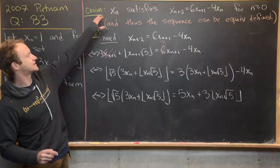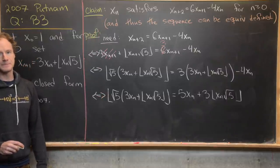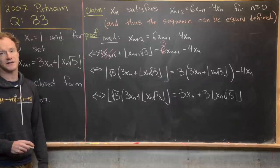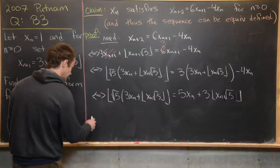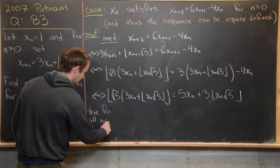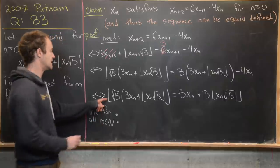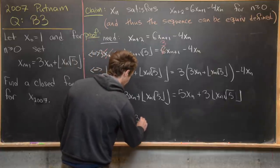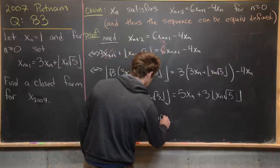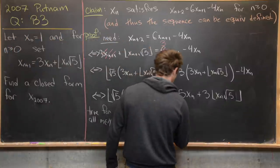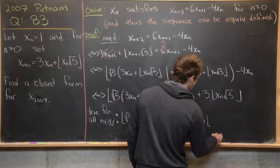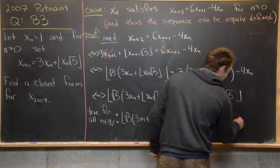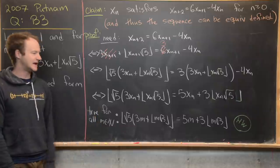We've reduced proving our claim to proving the following statement for all positive integers m: floor(√5 · (3m + floor(m·√5))) = 5m + 3·floor(m·√5). This statement seems hard when restricted to terms of the sequence, but it can actually be proved for all natural numbers m. I'm going to leave this as a homework exercise — if someone gives me a nice solution, I'll pin it to the top comment.